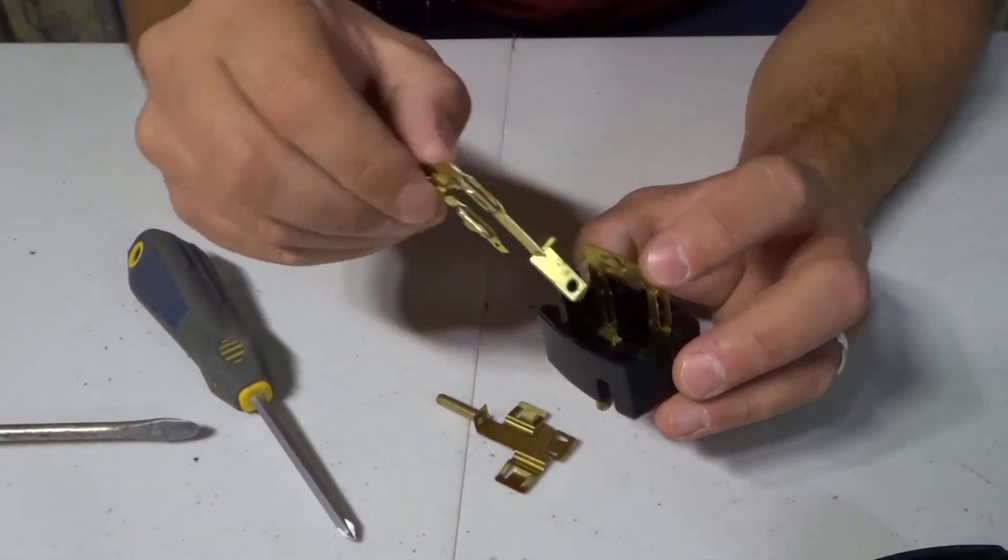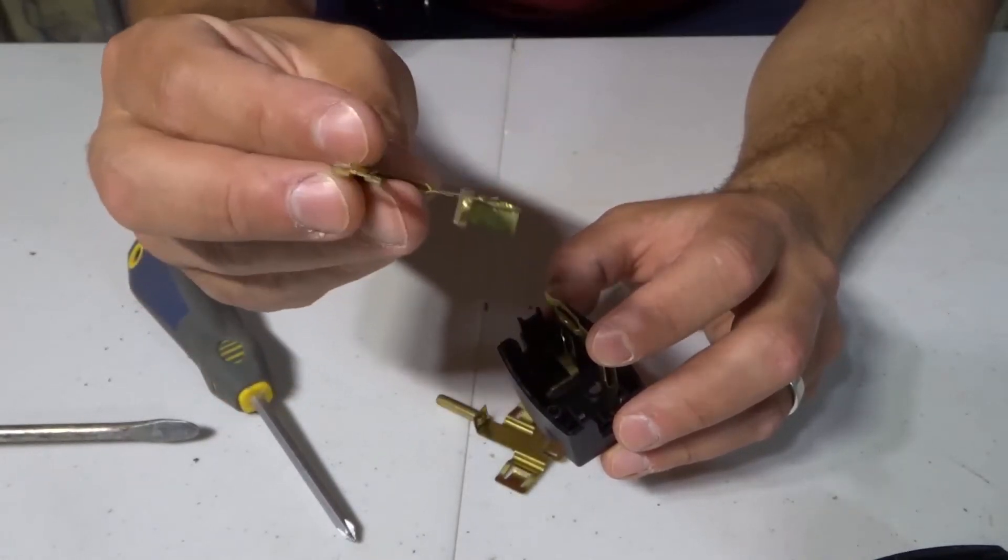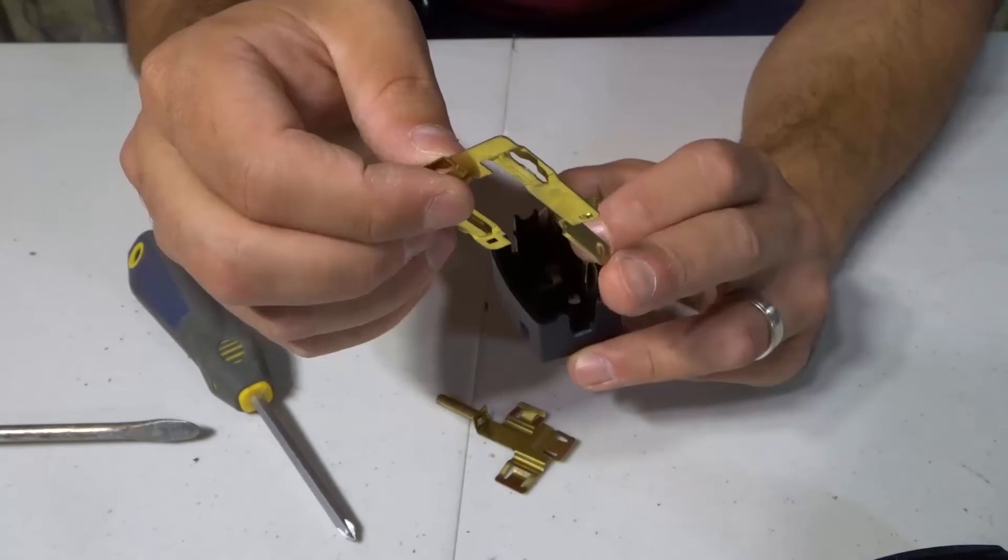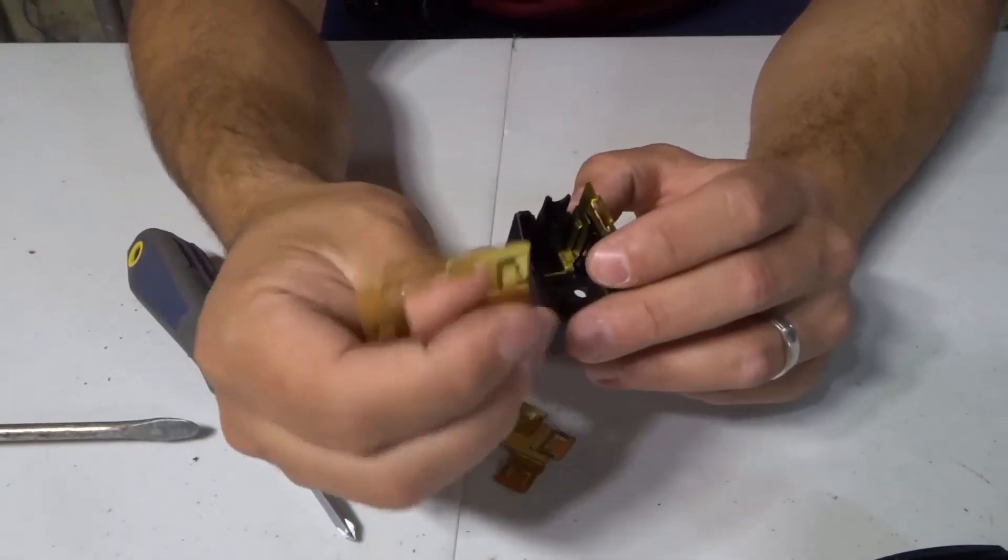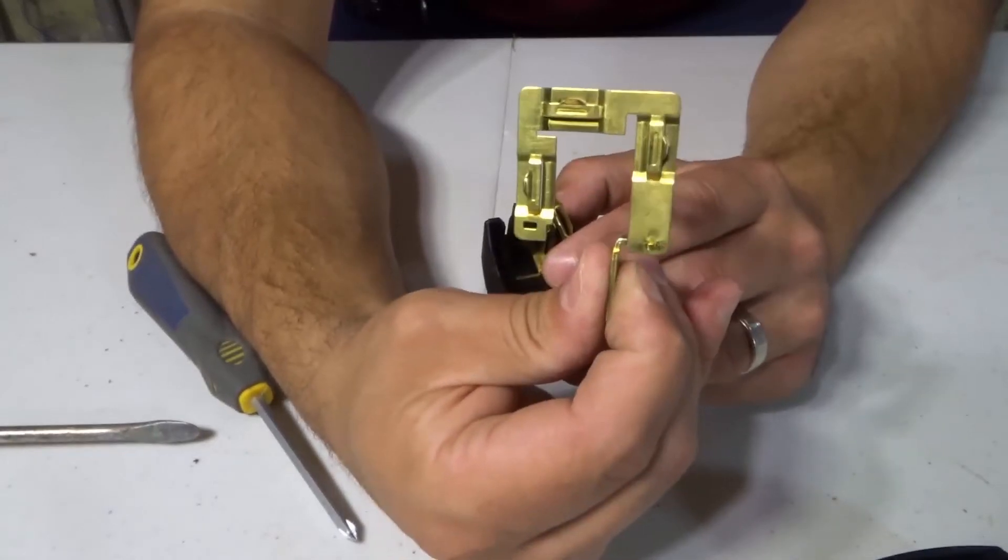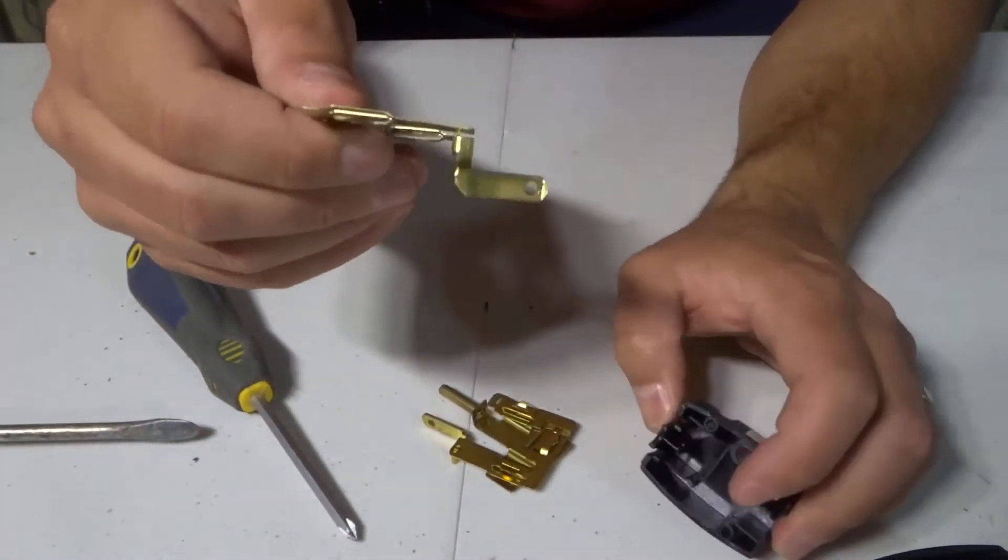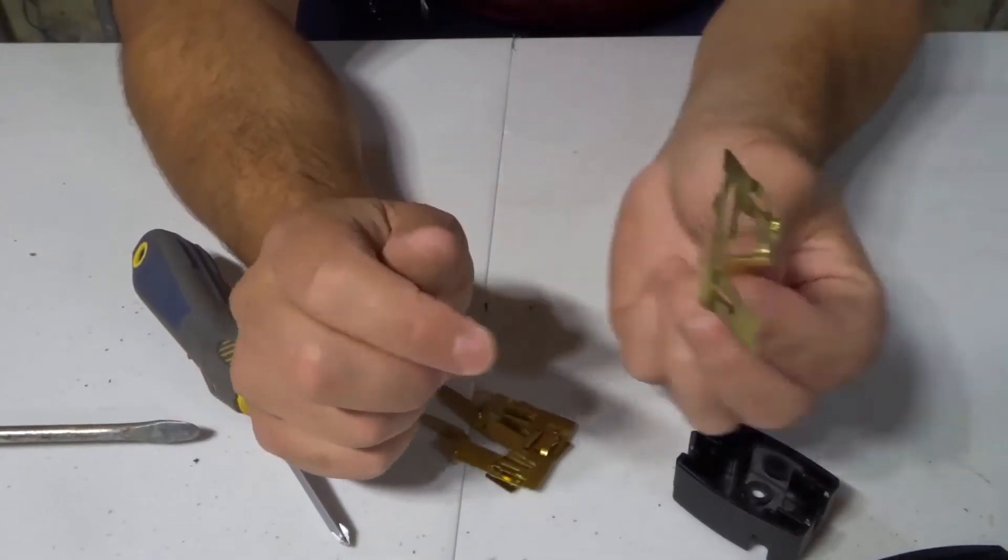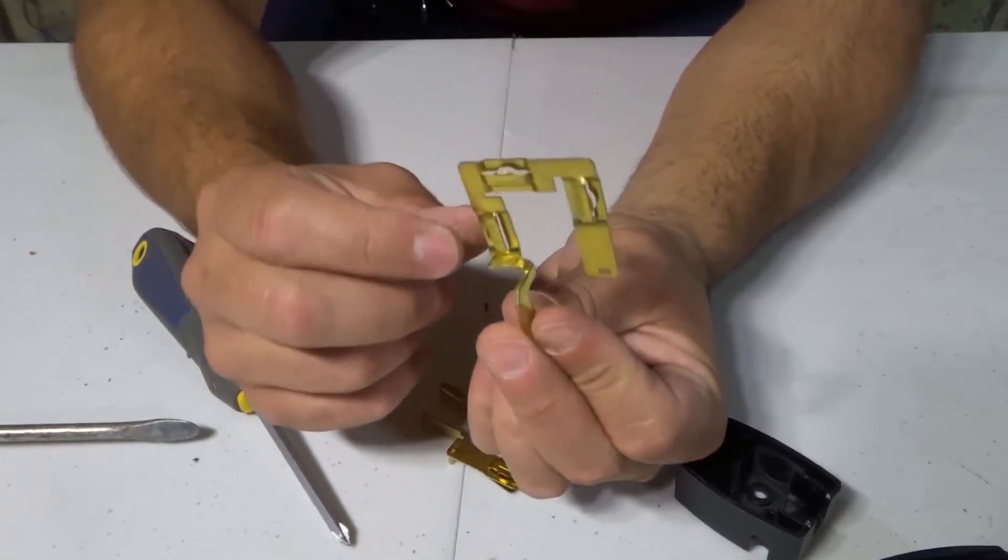This over here is one of those prongs. I'm not sure if this is the hot or the neutral, but if you look there's the prong that I just took out from there. This attaches to three other locations on this three-way plug splitter. And this is the other prong. This prong also attaches to three other locations on the plug splitter.